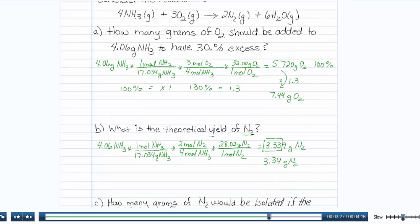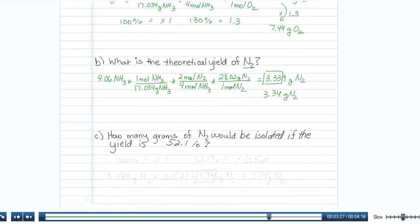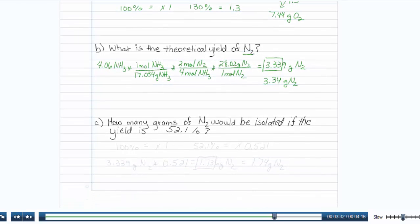The last piece says, how many grams of N2 would be isolated if the yield is 52.1 percent? Well, if 100 percent is equal to a factor of 1, hopefully you realize that 52.1 percent is equal to a factor of 0.521.